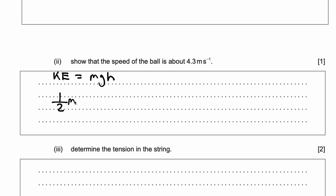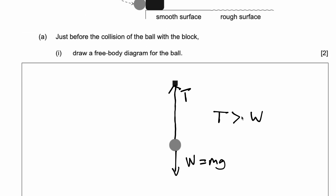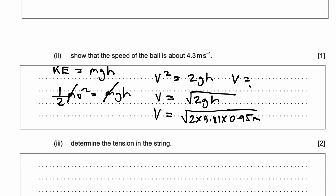We know that kinetic energy — half mv squared — is equal to mgh. Mass cancels on both sides, so v squared is equal to 2gh, meaning v equals the square root of 2gh. Putting in all the numbers: 2 times 9.81 times height. Height we know is 0.95 meters, converted from centimeters. Putting this on my calculator, I get v is equal to 4.32 meters per second, which is approximately 4.3 meters per second.